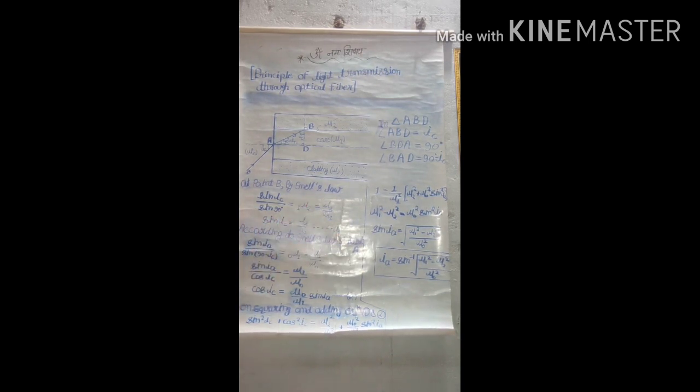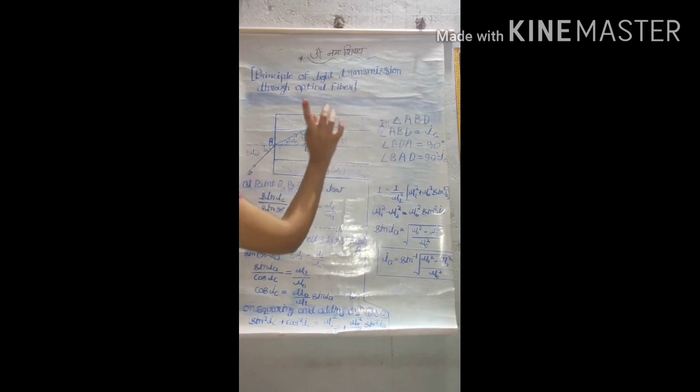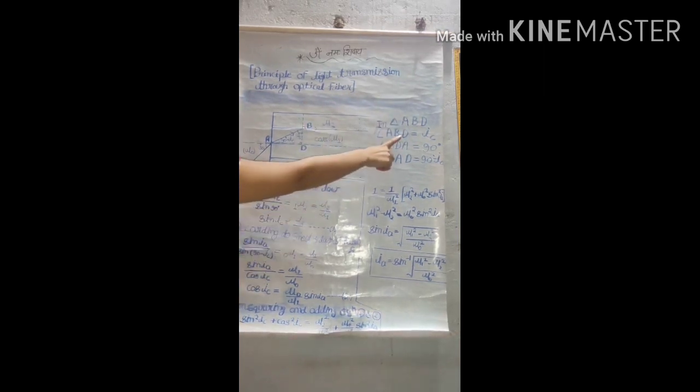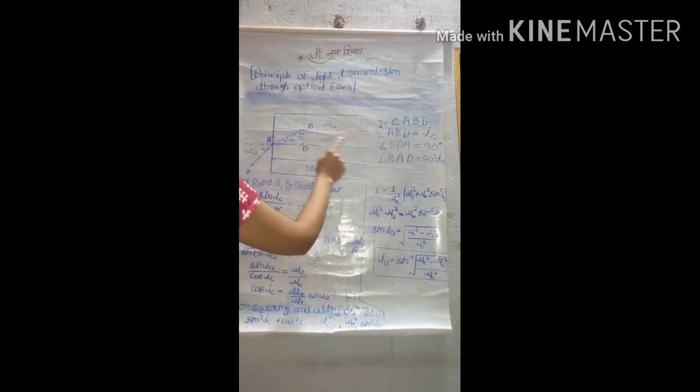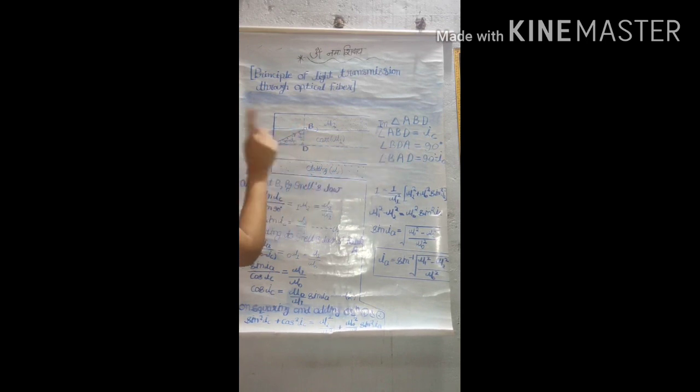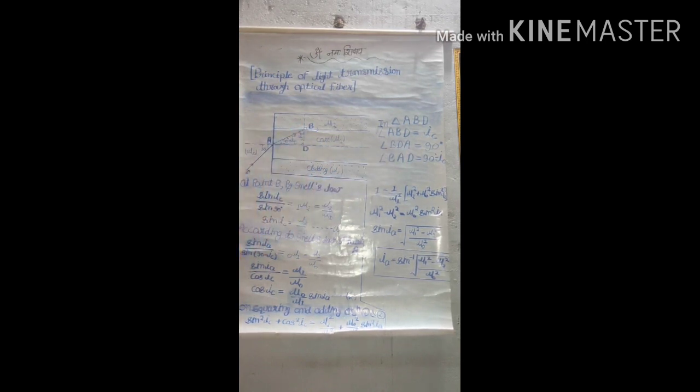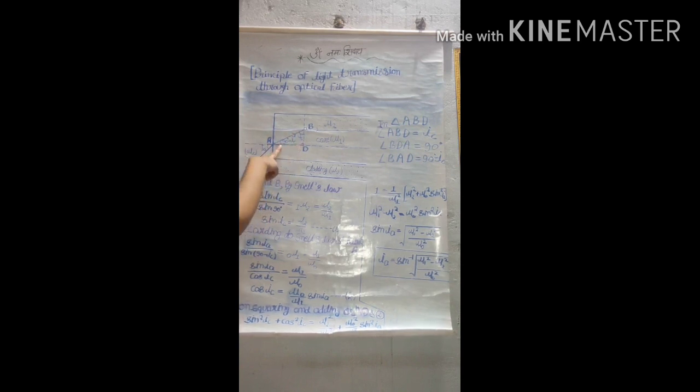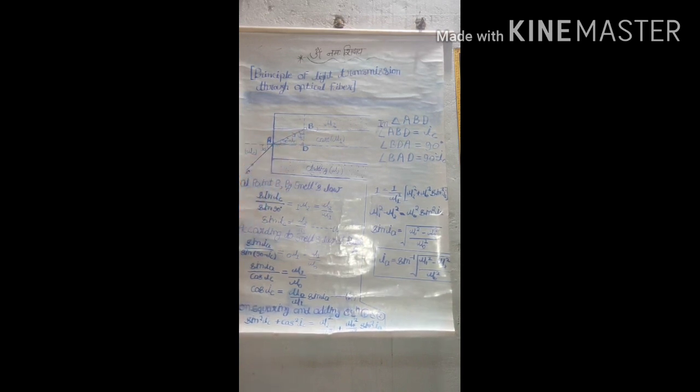Now again from the figure, in triangle ABD, angle ABD equals IC, angle DB equals 90 degrees. So angle BAD is 90 minus IC, because the sum of three angles of any triangle is 180 degrees. So if this is IC and this is 90 degrees, then this is 90 minus IC.